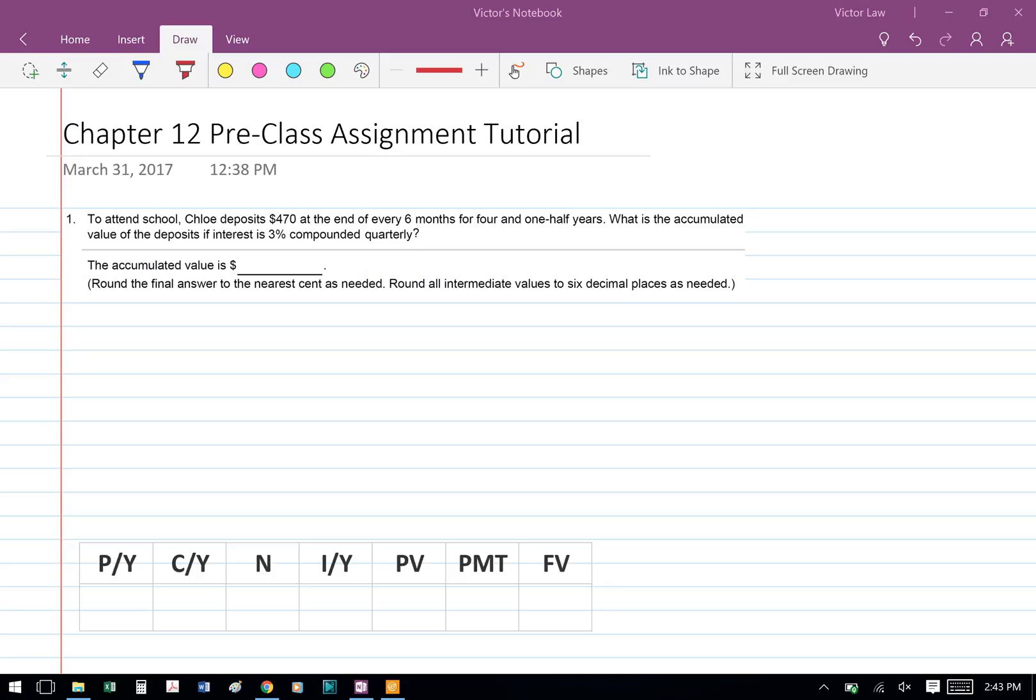To attend school, Chloe deposits $470 at the end of every six months for four and a half years. What is the accumulated value of the deposit if interest is 3% compounded quarterly?